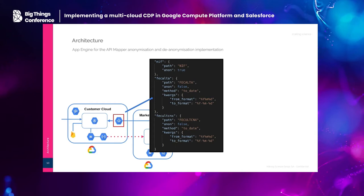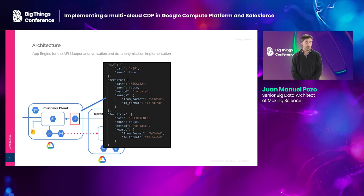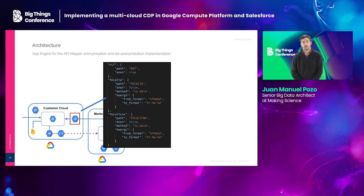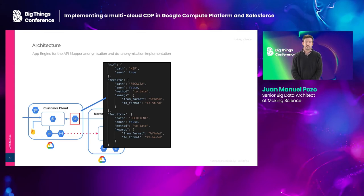We have for each file a property that tells us if we have to anonymize it or not. For example, in this case, the only field that has to be anonymized is the NIF, which is the client identification. With this mapper, we can generate a new file with the sensitive information of the client anonymized and we can move it to the marketing cloud. There are a lot of other parameters in the JSON file from the App Engine — those parameters are used in the marketing cloud just to transform, for example, dates to have them in a correct format for the data science team.